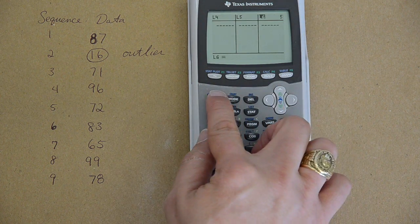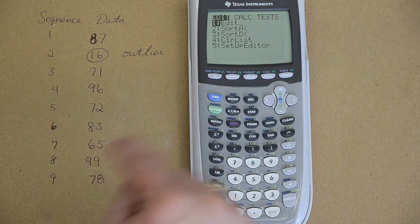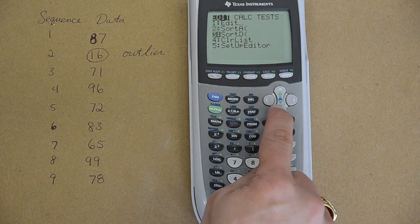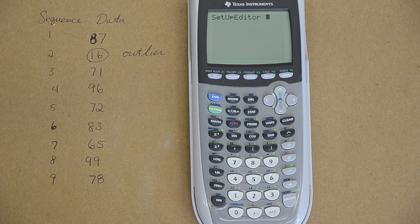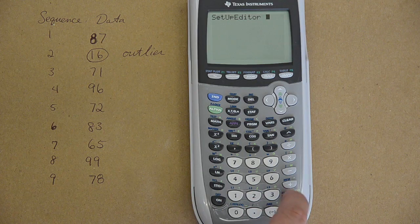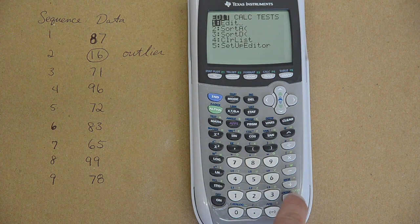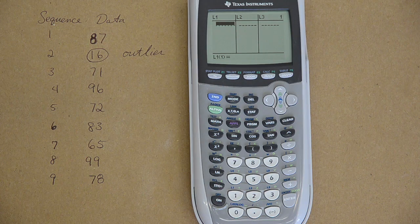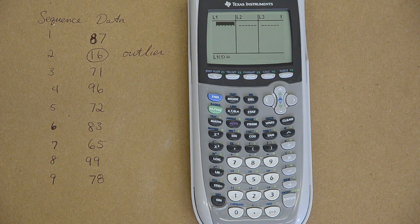If there were numbers in that list they actually would not be gone. You get that back by going to second, quit to get back to your home screen. Hit stat, select five which is set up editor. Nothing has happened yet, you have just selected that command and hit enter. Now when I go to stat, edit, that list one that I deleted accidentally is back.